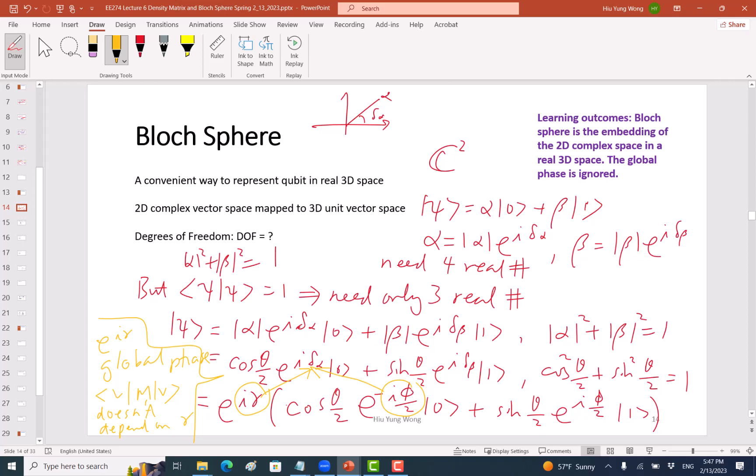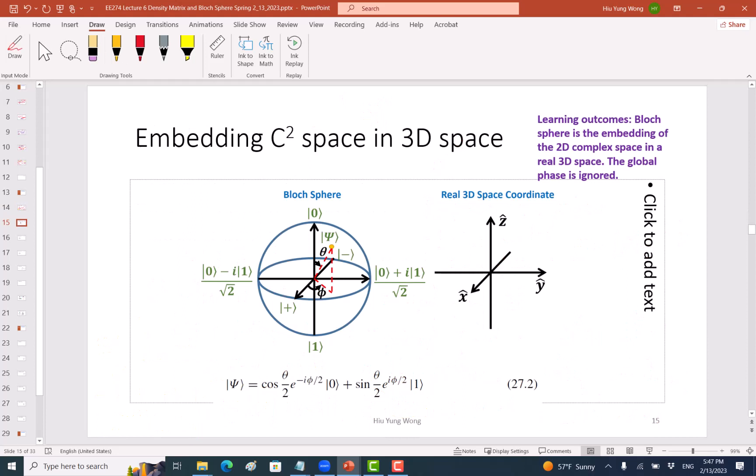Then we only have two parameters now, theta and phi, and what we are going to do is to embed in the Bloch sphere. So we will continue on Wednesday. Thank you.